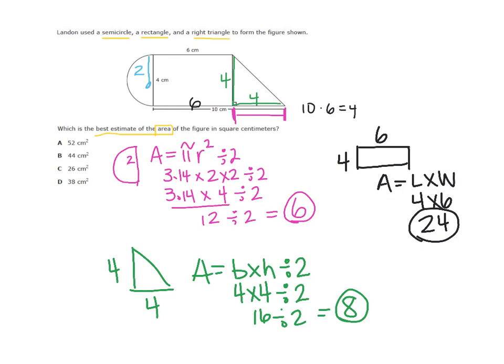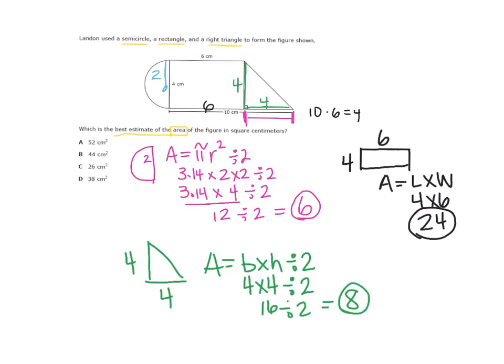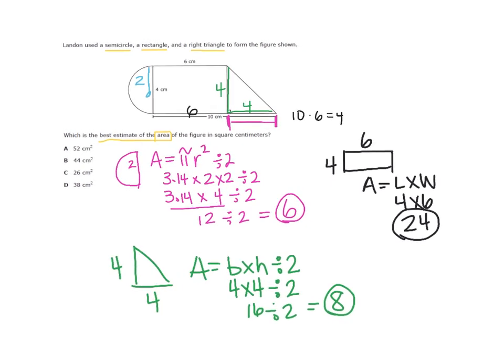Now I've got the three numbers for the sections of this shape and I need to put them together: 6 plus 8 plus 24. To get the total, 24 plus 8 plus 6. 8 plus 4 is 12, plus 6 more is 18, and then 1 plus 2 is 3. My total is going to be 38. Letter D is the best answer choice.